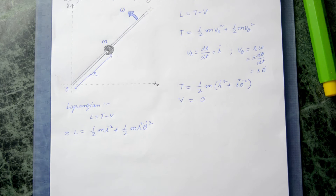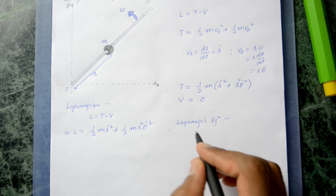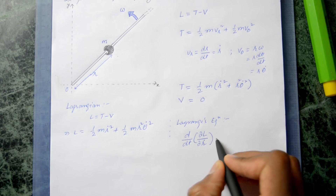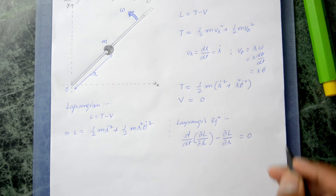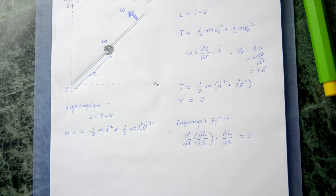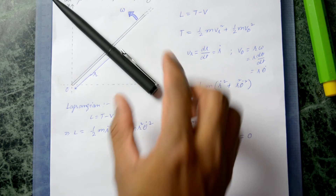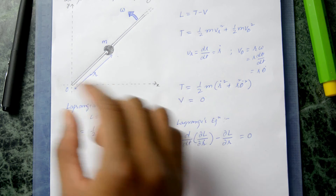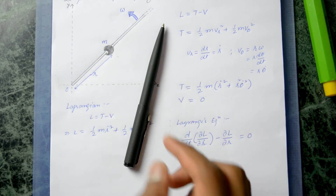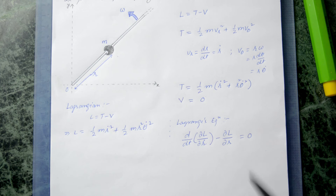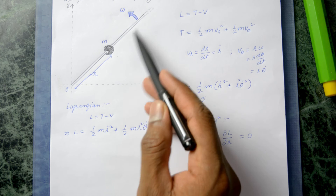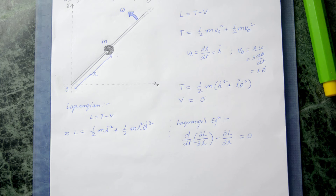We apply the Euler-Lagrange equation: d/dt(∂L/∂Ṙ) - ∂L/∂R = 0. The system has two coordinates — radial and angular — but since the rod constrains the particle to angular velocity omega, we already know θ̇ = omega. So we only need the Euler-Lagrange equation in terms of the radial displacement R.